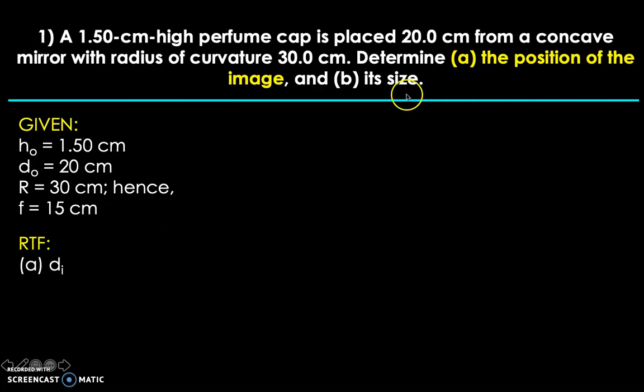So for the required to find, we have d sub i or the position of the image. Because the position of the image as well as image distance actually mean the same thing physically or although they're using different terms, distance, position. But physically speaking, they refer to the same thing.